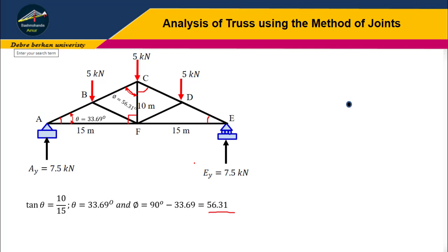Let's analyze joint E. First, establish the x and y axes. This is joint E with member DE, member FE, and Ey. Ey equals 7.5 kilonewtons. The arrow of the unknown forces must be assumed as tension. However, if the force calculated is compression, we have to change the arrow for the next analysis.